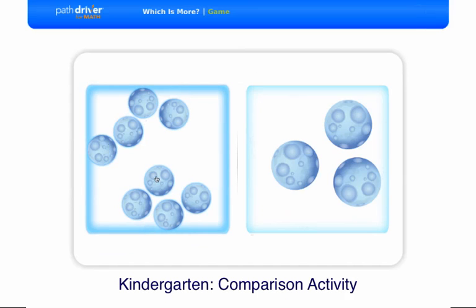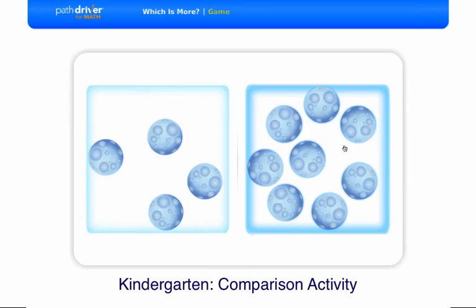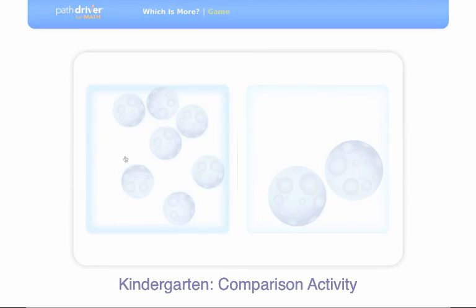The second kindergarten activity, or game, is called Which is More. The student sees two sets of objects and chooses which set has more by using the mouse to click on it.